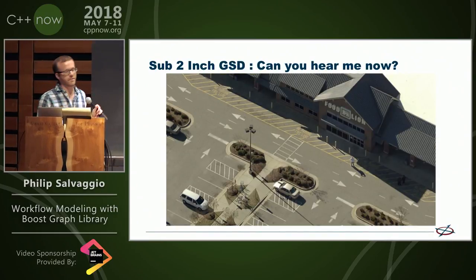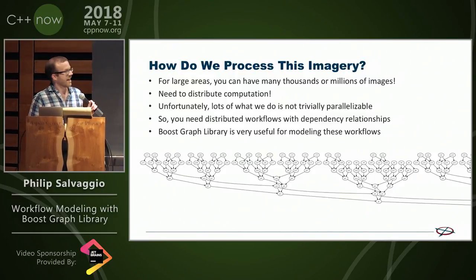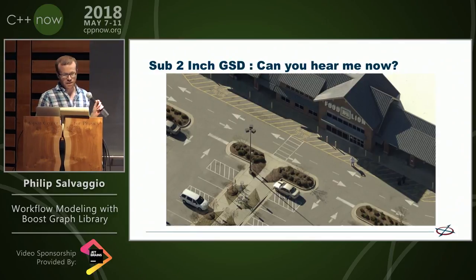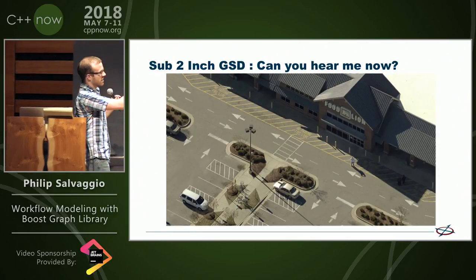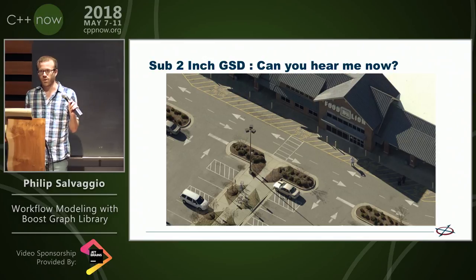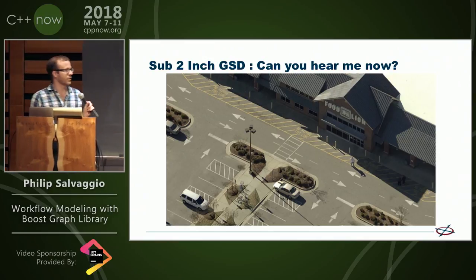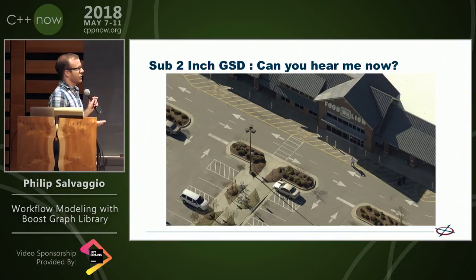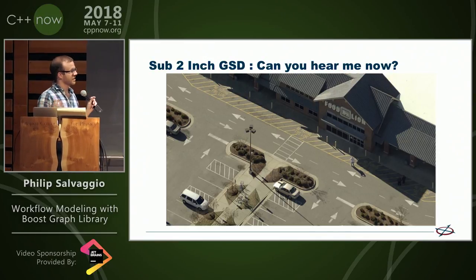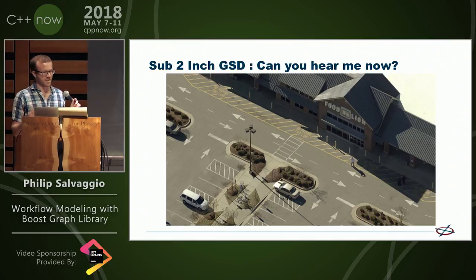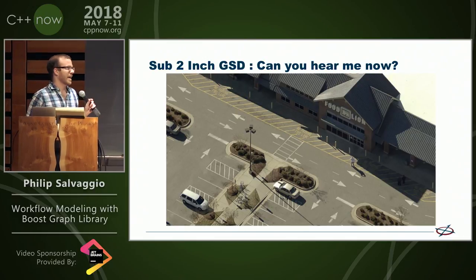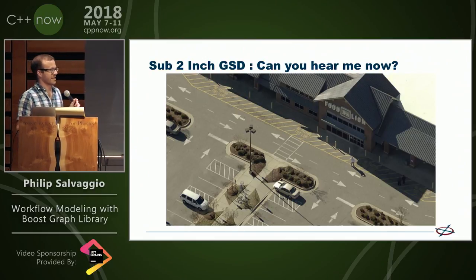This guy's talking on the phone outside Food Lion for some reason. And the issue is when we take pictures that look like this, this is a pretty small area. But we really care about whole counties, right? So if you want to take pictures of whole counties, you have thousands to millions of images, and we have to process all of them in a reasonable amount of time.